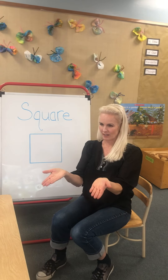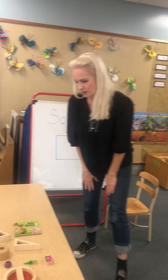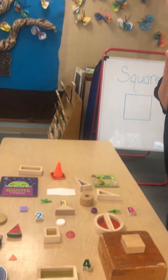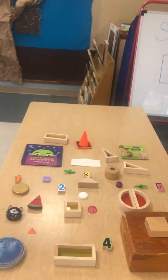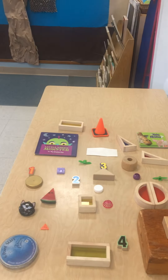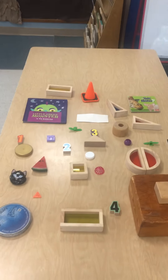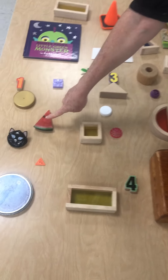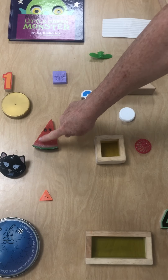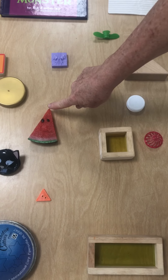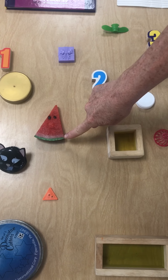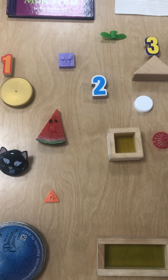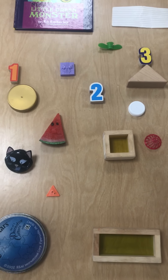Let's look at our table. Let's see how many square shapes we can find. How about this one? About one, two, three. Nope, not a square.